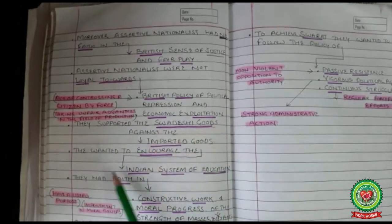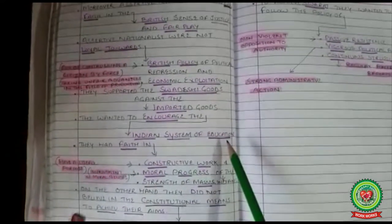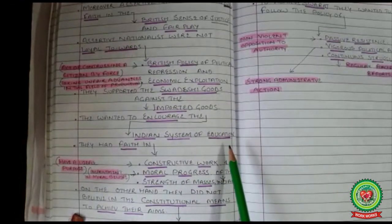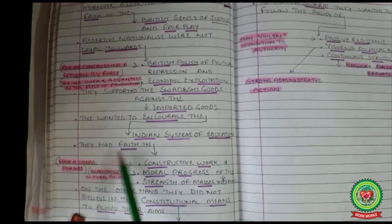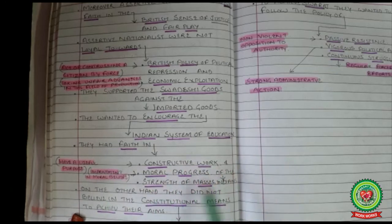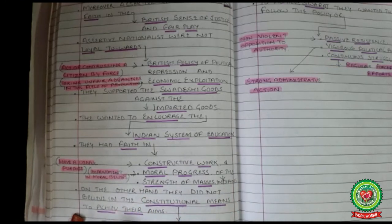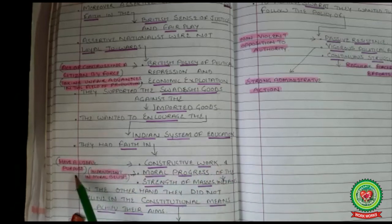They supported Swadeshi goods against imported goods. They wanted to encourage the Indian system of education, which means giving moral and intellectual education. They had faith in constructive work and moral progress, and in the strength of masses. On the other hand, they did not believe in constitutional means to achieve their aims. Constitutional means refers to the established set of principles.